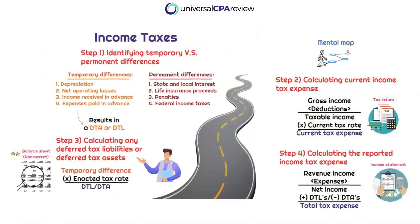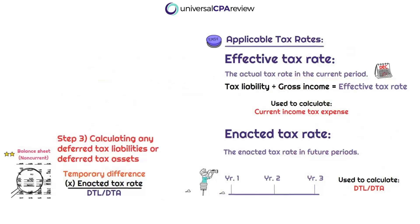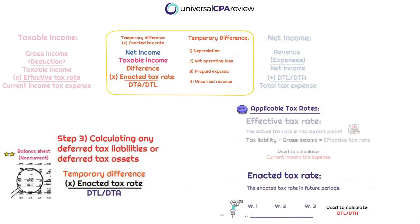Step three is determining our deferred tax liability and our deferred tax asset. Focus back on the temporary differences — it is only temporary differences that will result in deferred tax liabilities or deferred tax assets. Once we have determined the temporary differences, we can multiply those by the applicable tax rate to compute the deferred tax asset or the deferred tax liability. Now we're talking about the enacted tax rate — the rate enacted into law for future periods. The effective tax rate is today's rate for the current income tax portion, whereas the deferred portion will use the enacted tax rate.